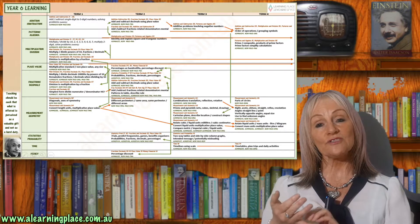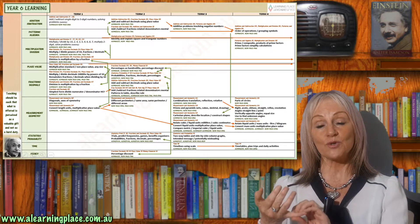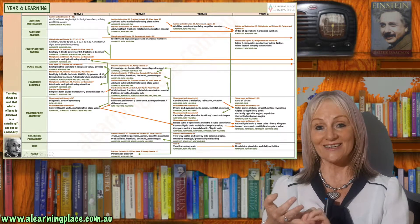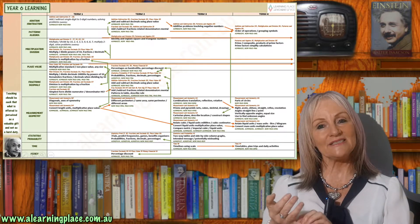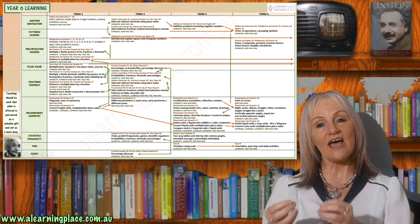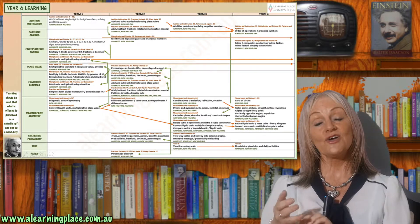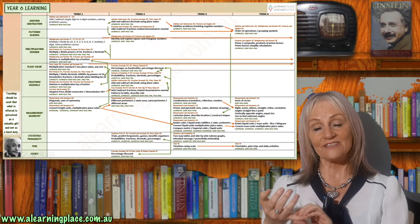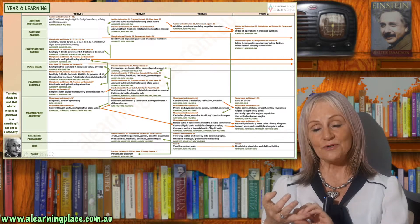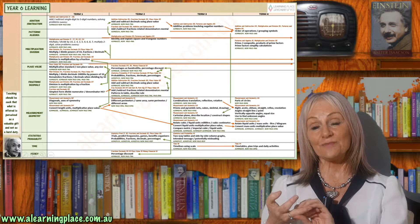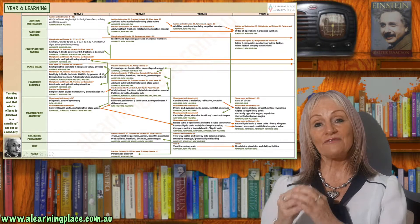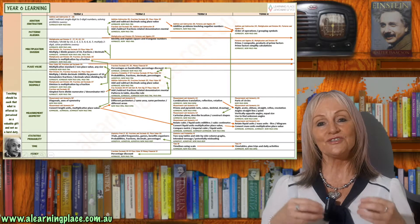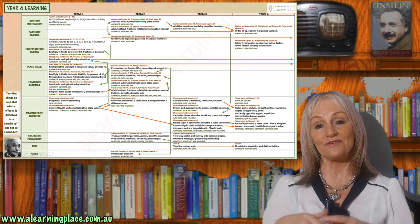Children will also identify and explain square numbers and triangular numbers. They will investigate percentages, which is just another word for hundredths. So now we have three ways to represent hundredths: as a fraction, as a decimal, and as a percentage. The reason we have three ways is because it's useful in different situations to represent hundredths in different ways.